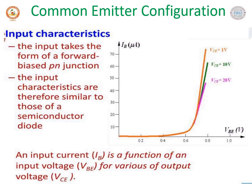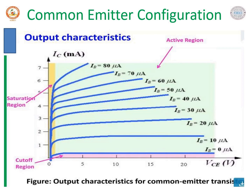The charge carriers constituting IC are minority carriers as they cross the collector-base junction. The region of the graph for the forward-biased collector-base junction is the saturation region; the region where the junction is reverse biased is the active region. The output characteristics is a plot of output current IC versus output voltage VCE, keeping input current IB constant. Clearly indicate the saturation region, cutoff region, and active region: the active region has the emitter-base junction forward biased and collector-base reverse biased; the cutoff region has both junctions reverse biased; the saturation region has both junctions forward biased.